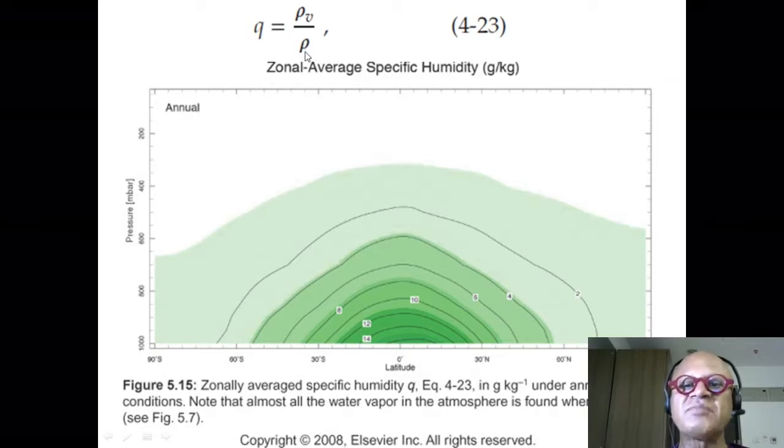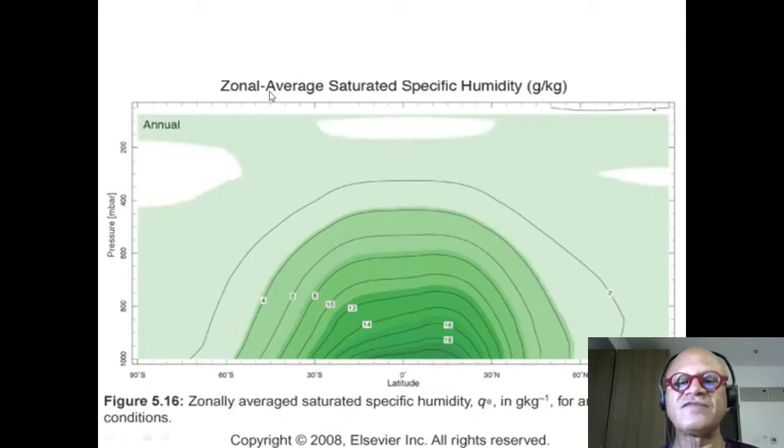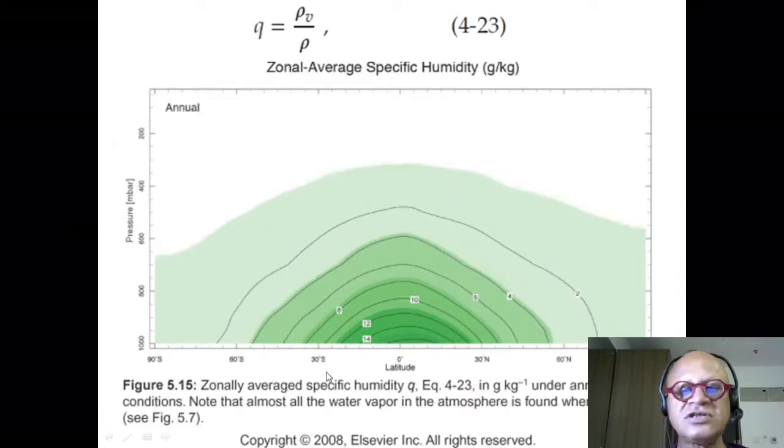So it's rho_V divided by rho_V plus rho_D, where rho_D is the density of dry air. So this is the zonally averaged saturated specific humidity, Q star. Looks a little bit different than this, obviously.